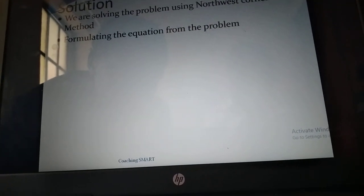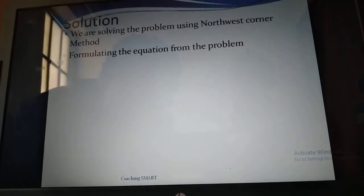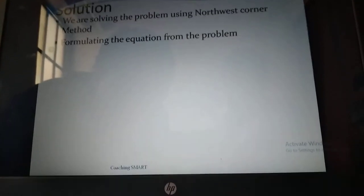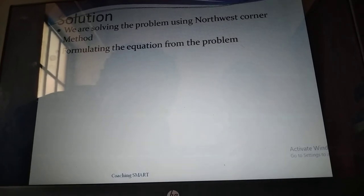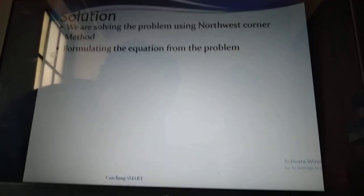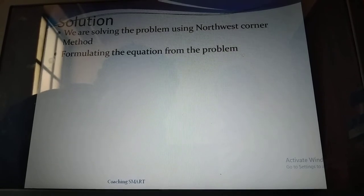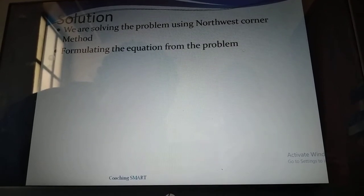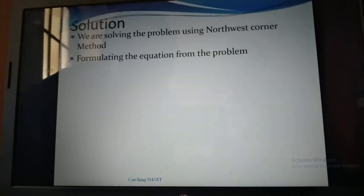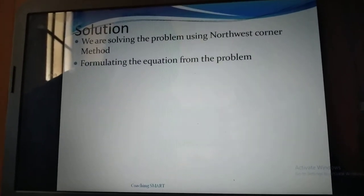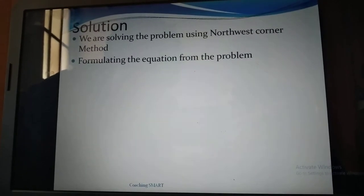How do we solve this problem? Our first method is the North West Corner Method to get the initial feasible solution. Remember, in determining the initial feasible solution we have three methods: the North West Corner Method, the Lowest Cost Method, and Vogel's Approximation Method. We are starting with number one, the North West Corner Method.